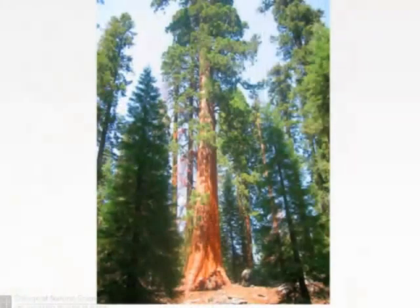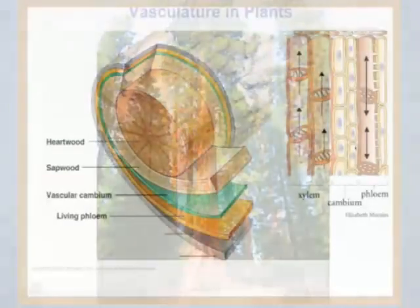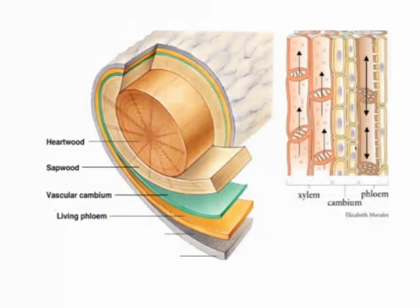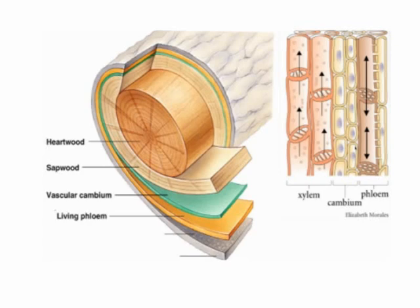The woody type of stem, by contrast, derives its mechanical support by possession of support tissues whose cells have stiff, thickened or lignified walls. Therefore, they are referred to as strengthening tissues. These tissues include the collenchyma, sclerenchyma, xylem vessels and tracheids. Even when completely dry, these cells remain strong and maintain their shape.